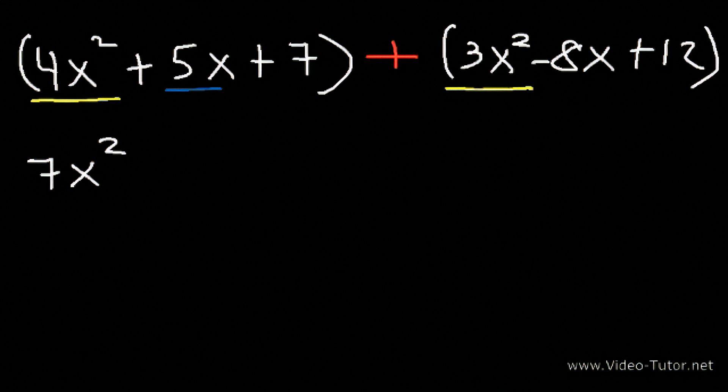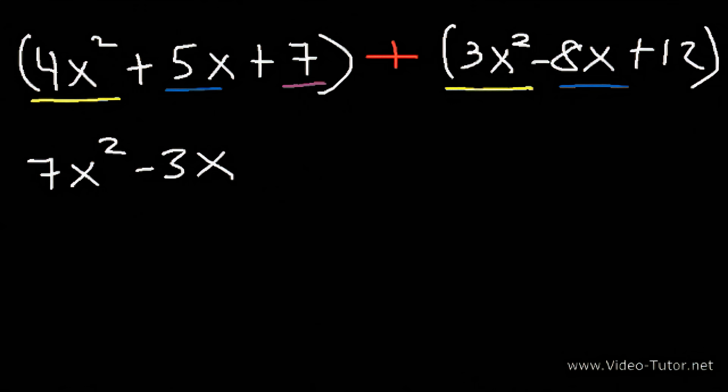Now 5x and negative 8x are like terms. 5 minus 8 is negative 3. And finally we can add 7 and 12, which together is 19. So that wasn't too bad, right? Let's try another example.